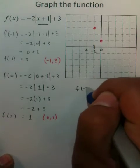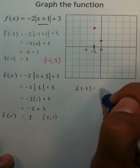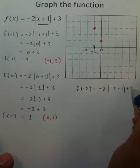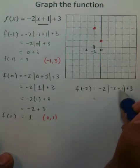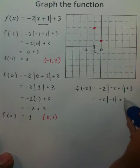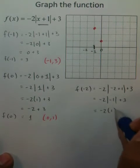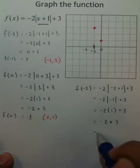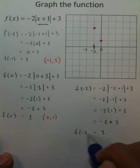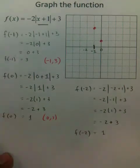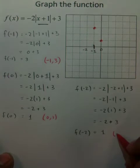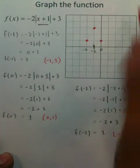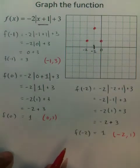Now for x = negative 2: plugging into the equation gives negative 2 times the absolute value of negative 2 plus 1, plus 3. This becomes the absolute value of negative 1, which is regular 1, times negative 2 is negative 2, plus 3 gives positive 1. So the next coordinate is negative 2 comma 1.